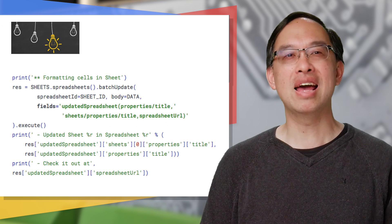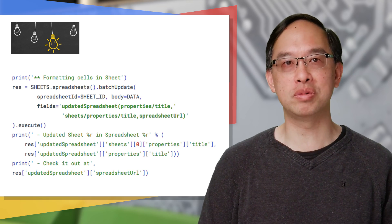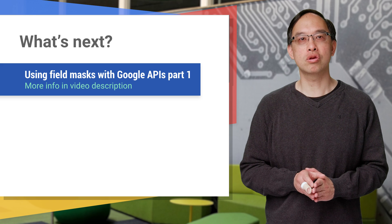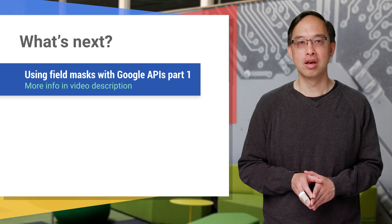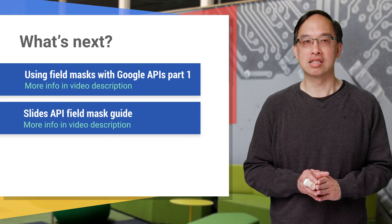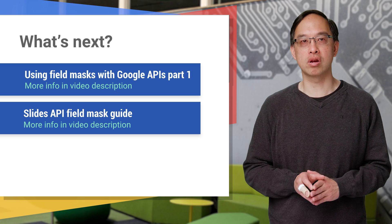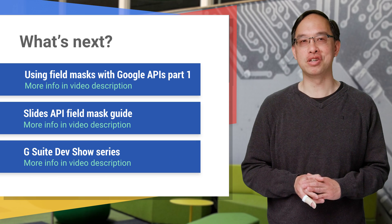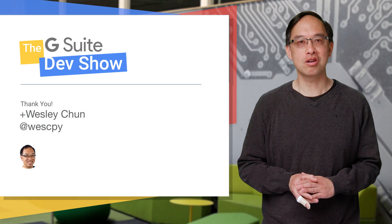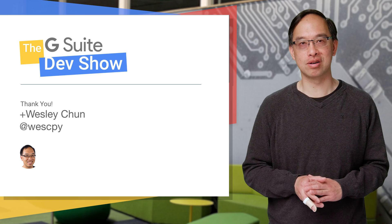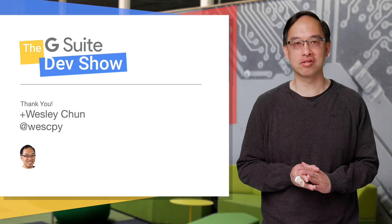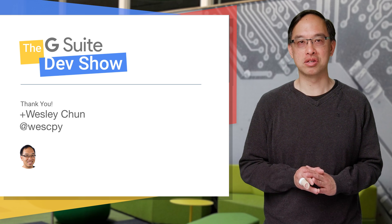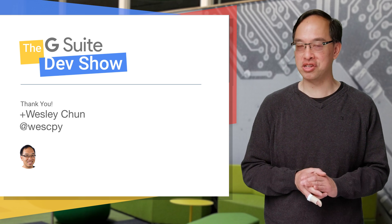That wraps up our journey into field masks — field masks in the update request body and field masks in the call to obtain a partial response. Be sure to tune into part one if you missed our show on partial response. The field mask guide in the Slides API docs is the most comprehensive, covering read and write, so check it out. Now that you know how to use field masks in read and write API calls, it's time to build that awesome app. Be sure to subscribe to our channel to get the latest from Google Developers. This is Wesley Chun, and we'll see you next time on the G Suite Dev Show.